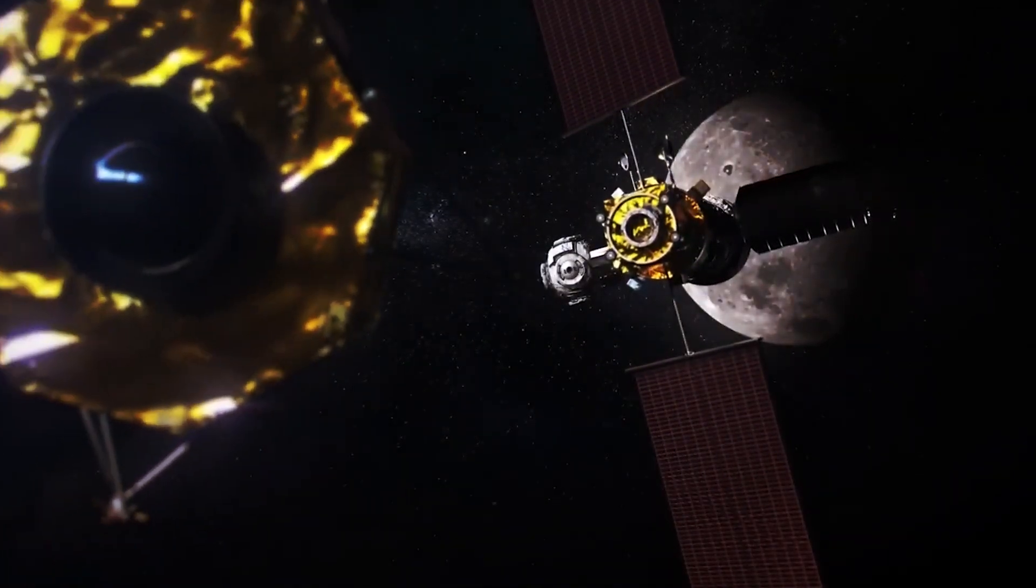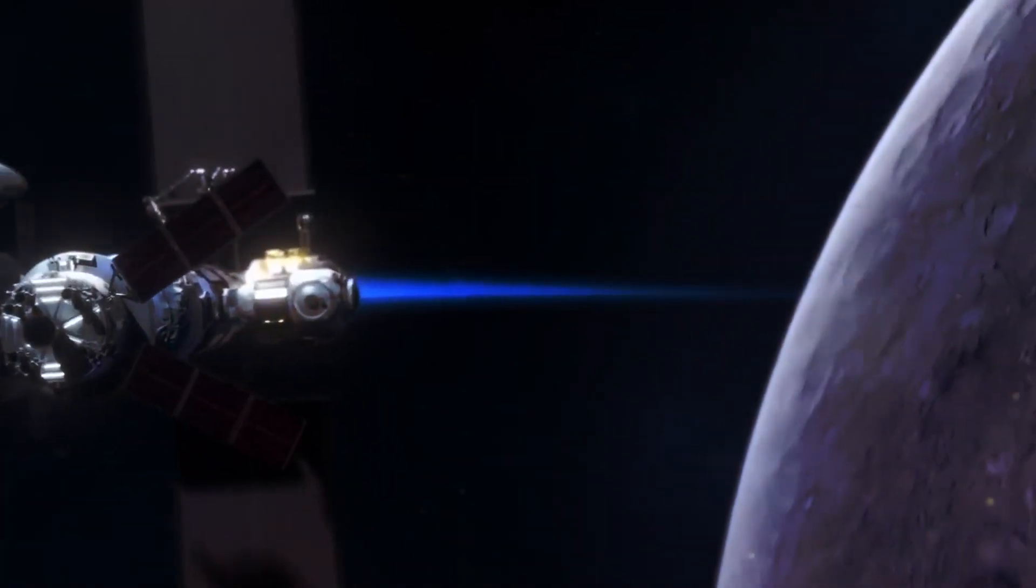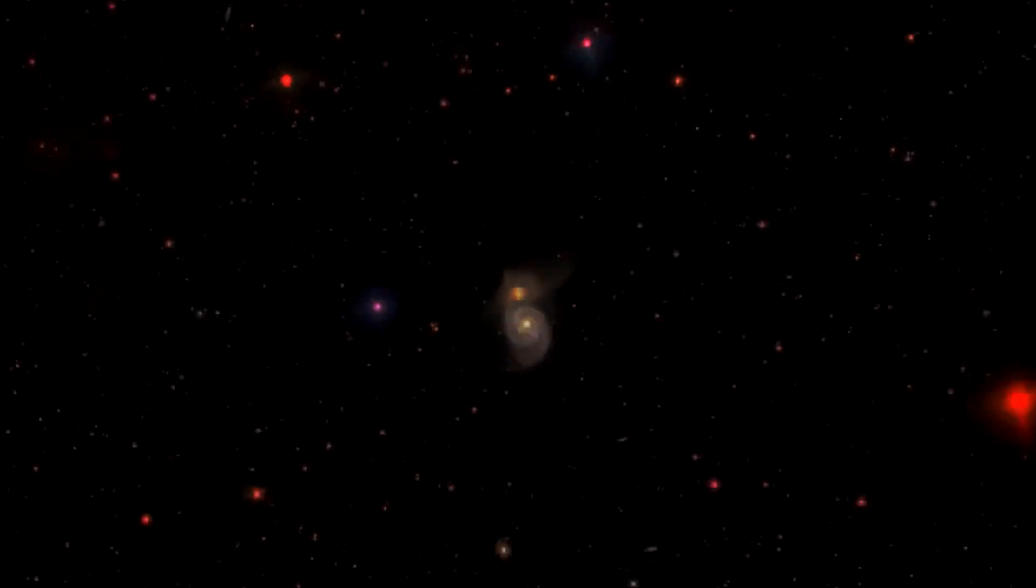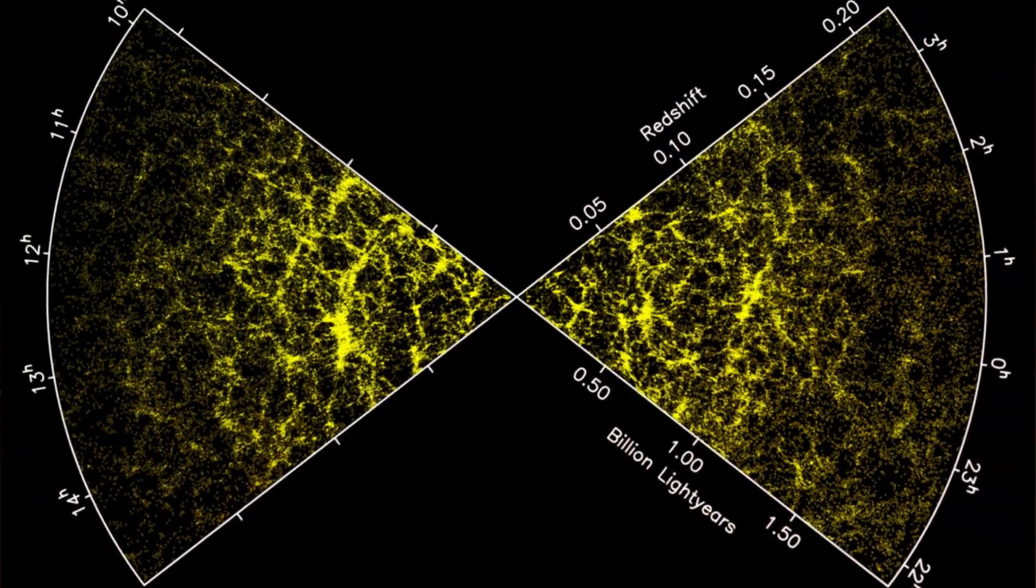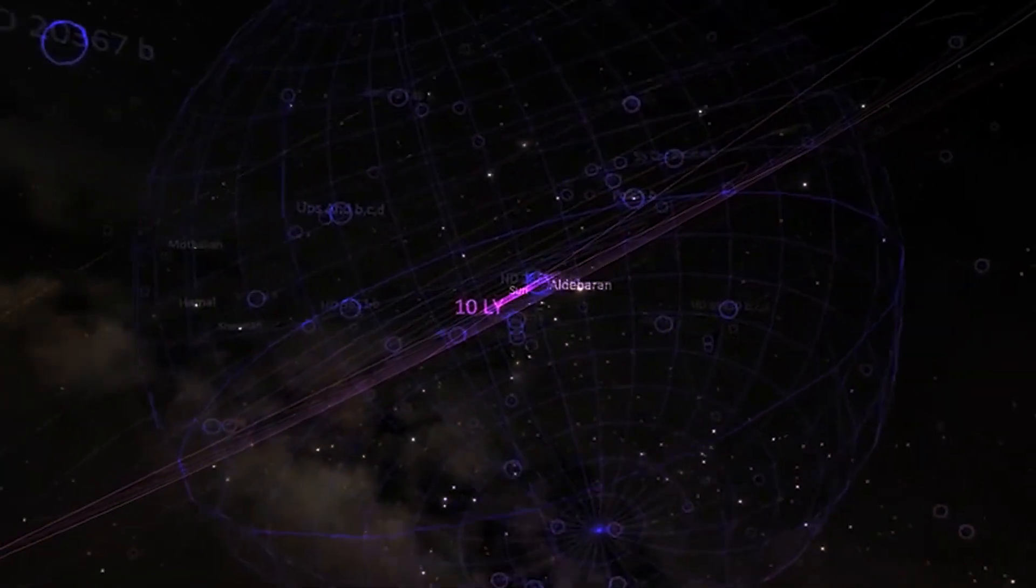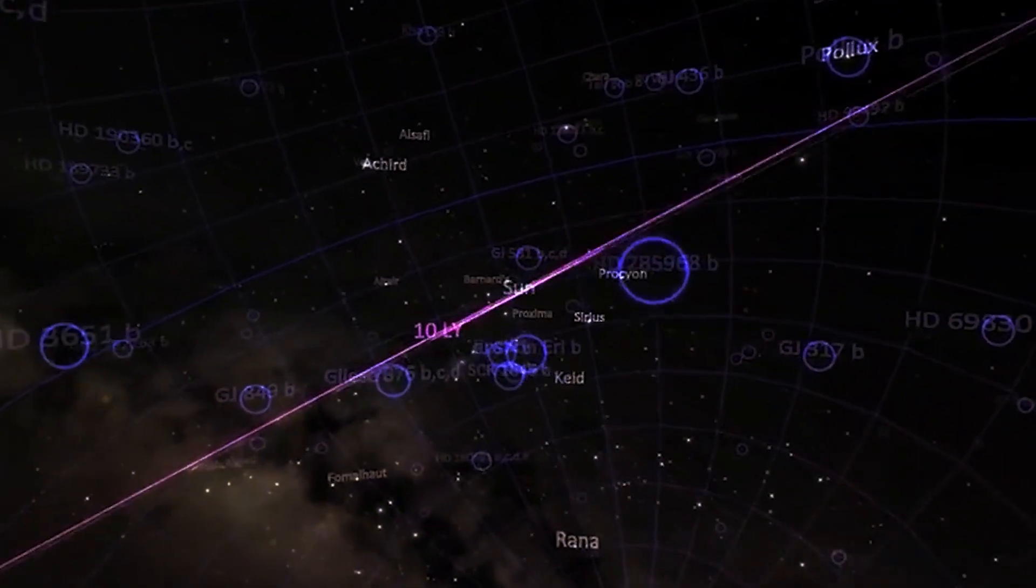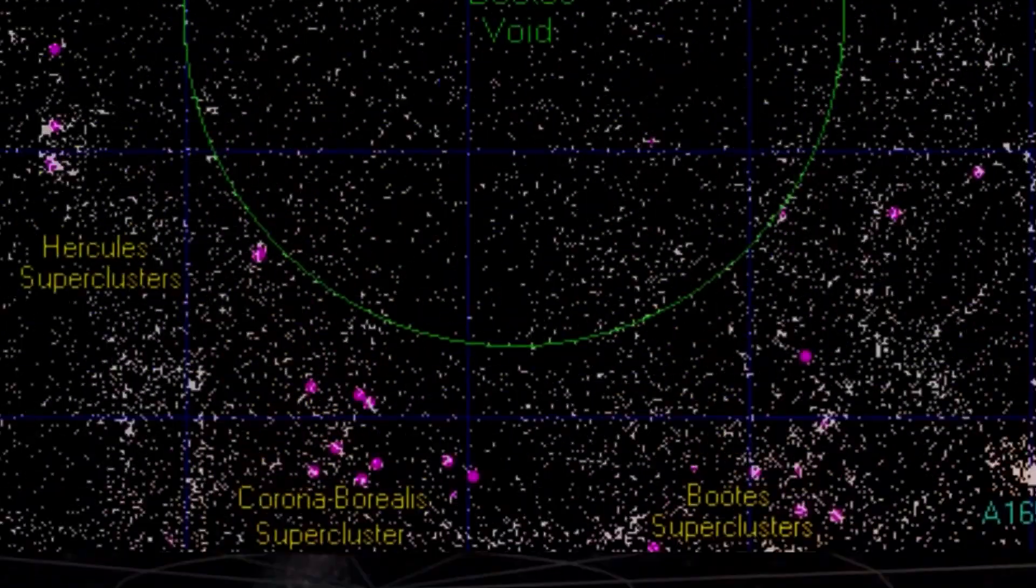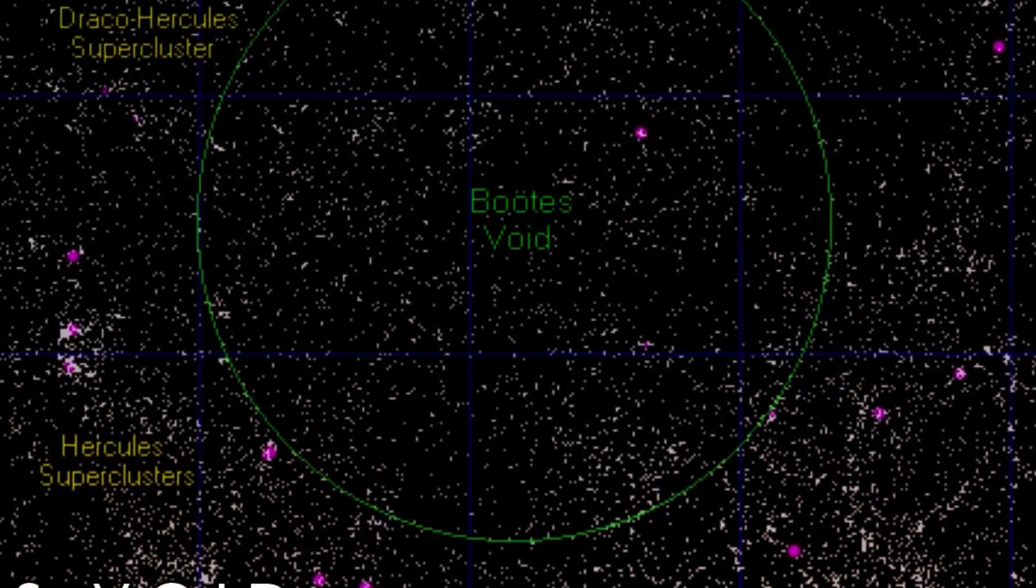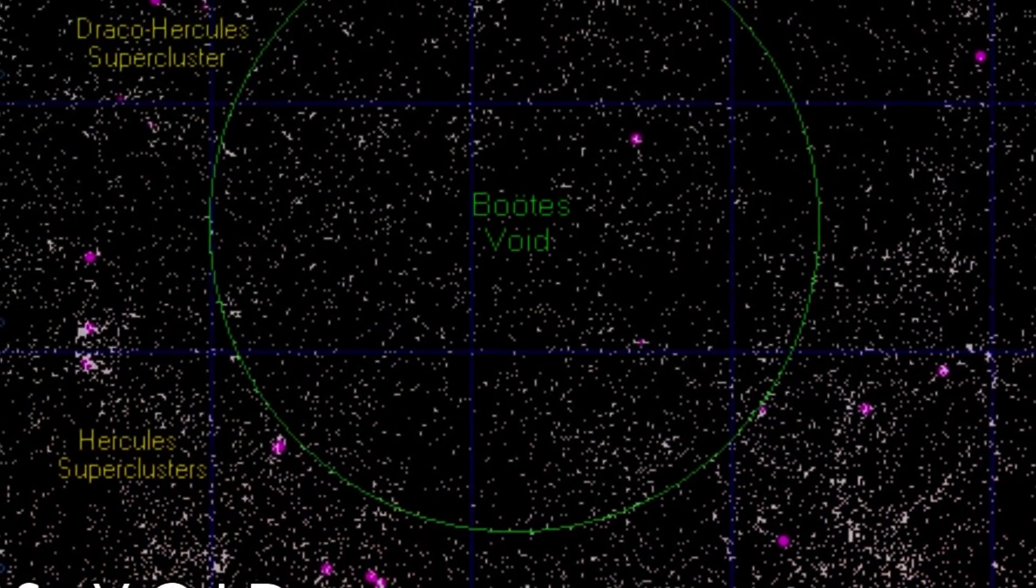As we entered the 21st century, technology opened new horizons for understanding these cosmic voids. The Sloan Digital Sky Surveys and 2dF Redshift Studies created three-dimensional maps of the universe, offering us a clearer picture of these voids. But despite our progress, cosmic voids remain shrouded in mystery, challenging our scientific understanding.